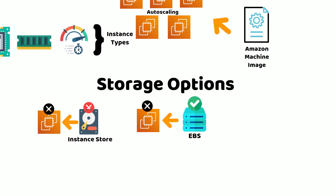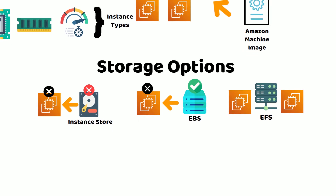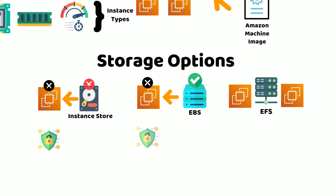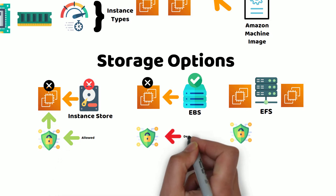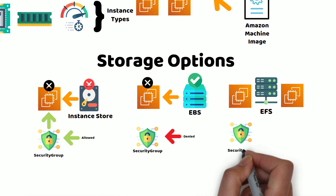If you need to share data between multiple EC2 instances, you can use Elastic File System, or EFS, volumes. Since you may be storing sensitive data on storage attached to your EC2 instances, you need a way to allow only authorized traffic into or out of your instances. Security groups are used for that purpose.